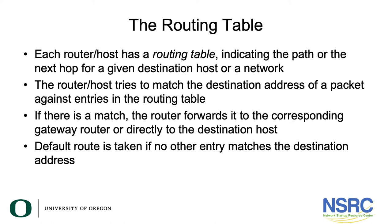What is a routing table? Each router or host has a routing table indicating the path, or the next hop, of a given destination host or network. The router or host will try to match the destination address of the packet against the entries in the routing table. If there's a match, it will forward it to the corresponding gateway router or directly to the destination host. A default route is taken if no other entry matches the destination address.